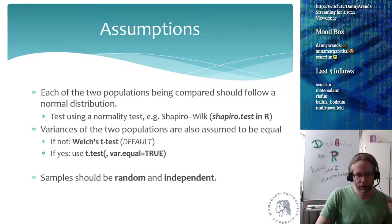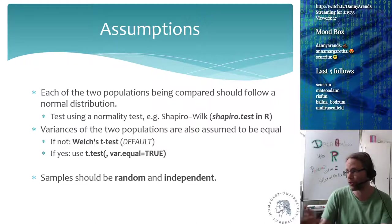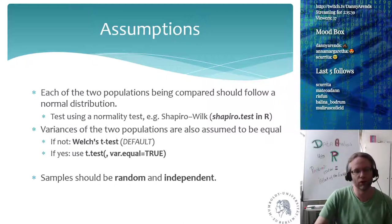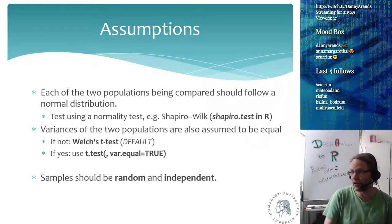The assumption is that each of the two populations being compared follows a normal distribution. You can test this in R — if you have a hundred measurements and want to know if they follow a normal distribution, you can use the Shapiro-Wilk test, called shapiro.test in R. You just give it your measurement values and it will give you a p-value to tell you if the distribution is significantly different from normal.